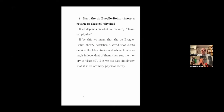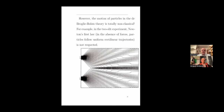First question: isn't the de Broglie-Bohm theory a return to classical physics? Well, it all depends what you mean by classical physics. If you mean that it describes a world that exists outside of laboratories and whose functioning is independent of observers, then yes, the theory is classical — but you can simply say this is an ordinary physical theory. The motion of the particle is very non-classical. For example, in the two-slit experiment, Newton's first law is not respected: in vacuum with no forces and no potential, particles should follow uniform rectilinear trajectories, and obviously this is not the case.